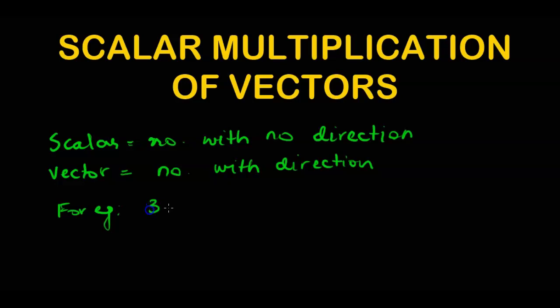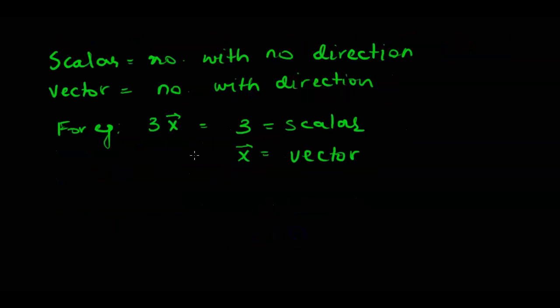Let's take up an example where you have to multiply a scalar with a vector. Here 3 is the scalar and x is a vector. If you want to find out what is 3x, that means we are multiplying the scalar with a vector. Let's say we are given x vector as (3, 5).